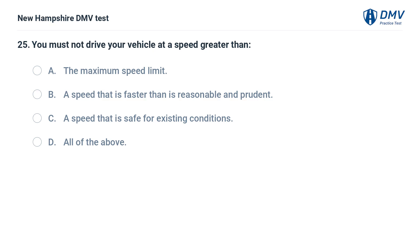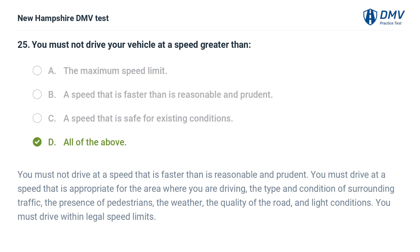You must not drive your vehicle at a speed greater than: A) the maximum speed limit, B) a speed that is faster than is reasonable and prudent, C) a speed that is safe for existing conditions, D) all of the above. The answer is D. You must drive at a speed appropriate for the area, the type and condition of surrounding traffic, the presence of pedestrians, the weather, the quality of the road, and light conditions. You must drive within legal speed limits.